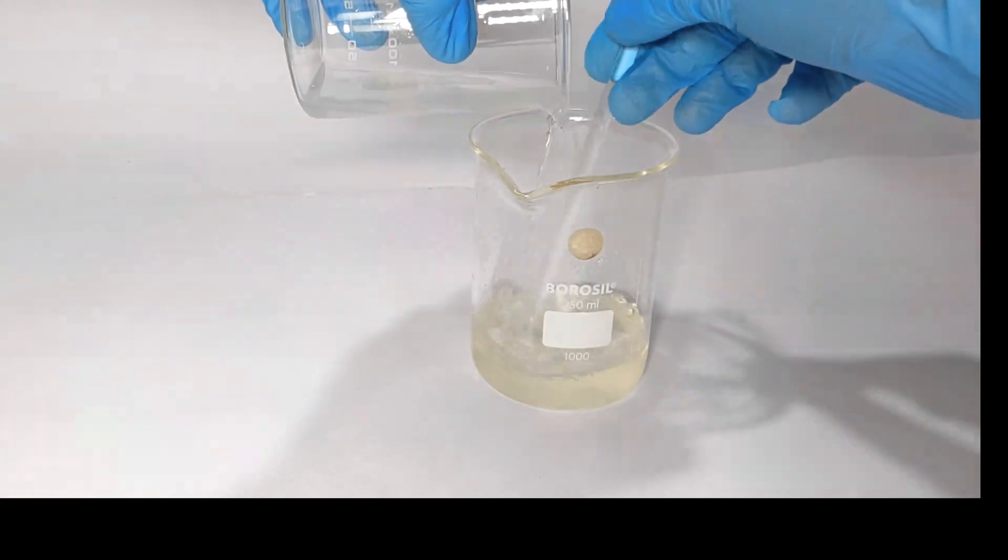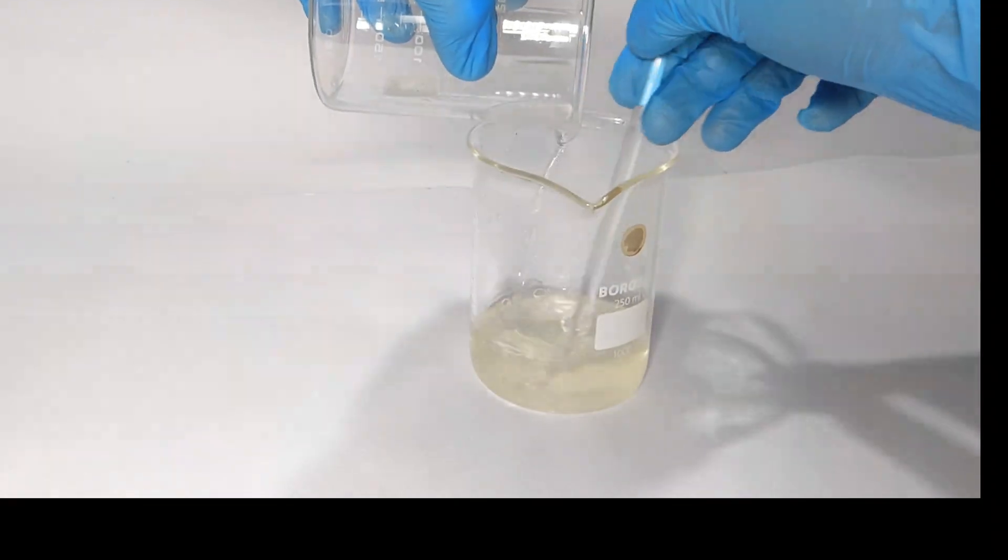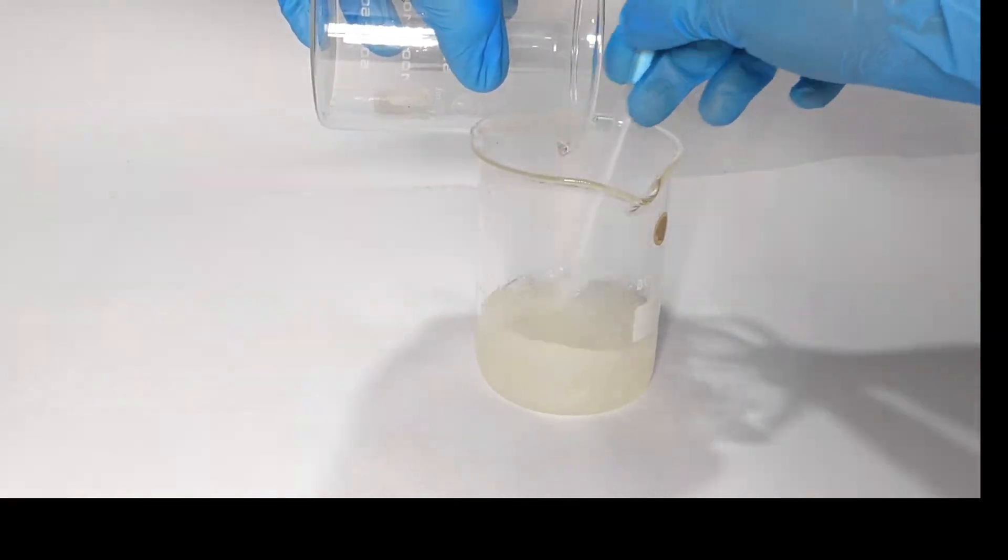Initially there is nothing much happening but once most of the lead(II) nitrate is added, a white crystalline precipitate crashes out and it becomes very difficult to stir the contents.